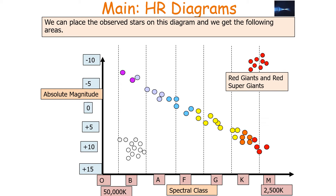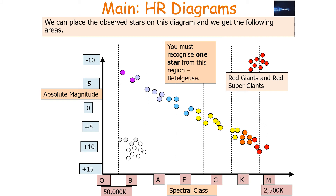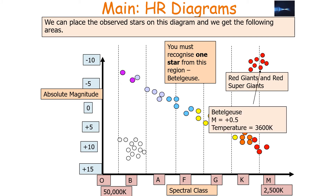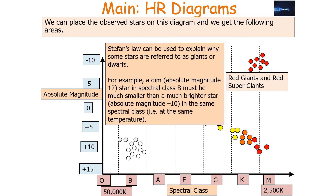The red giant and red supergiant group suggests that these stars are bright but quite cool. One star to recognise from this region is Betelgeuse, which has an absolute magnitude of approximately minus 5 and a temperature of 3,700 Kelvin. Now using P = σAT⁴, the red colour suggests a low temperature, so to maintain the power output the area of these stars must be large. This explains why some stars are referred to as giants — Stefan's law tells us a dim star of absolute magnitude plus 10 in spectral class B must be much smaller than a brighter star of absolute magnitude minus 10 in the same spectral class.